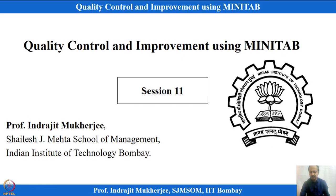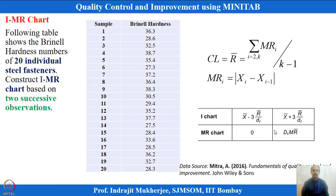In this section, we will talk about one more control chart and then move towards attribute type of charts, which are also very relevant and frequently used in controlling quality. One prominent chart arises when I cannot collect multiple observations of subgroups at a given time point.